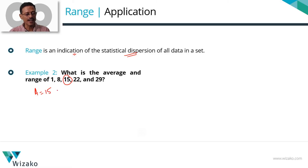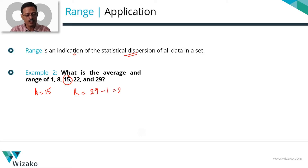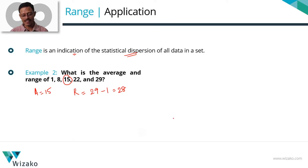Alternatively, you need to add 1 plus 8 is 9, plus 15 is 24, plus 22 is 46, plus 29 is 75, divided by 5 equals 15. That's going to take you 15 seconds compared to spotting the AP which takes no time at all. So always be switched on when you are looking at numbers. For Part 2, we need to compute the range. Range is the largest minus the smallest: 29 minus 1 equals 28. So the range for this set of data is 28.